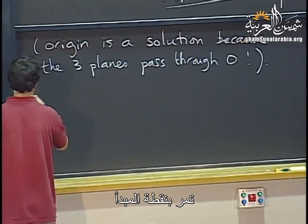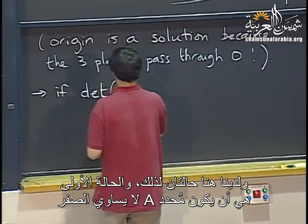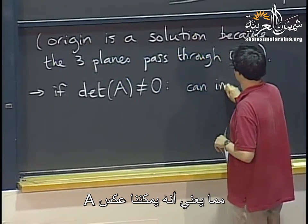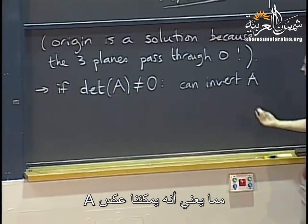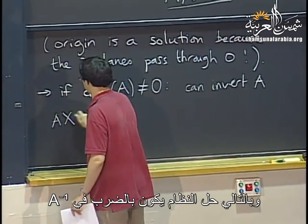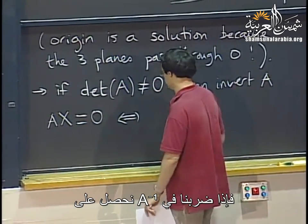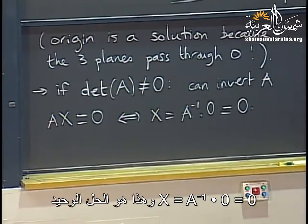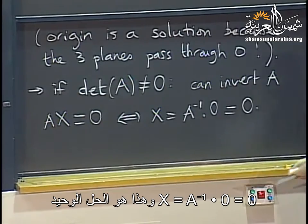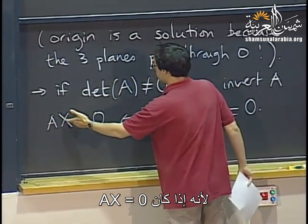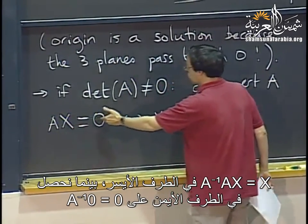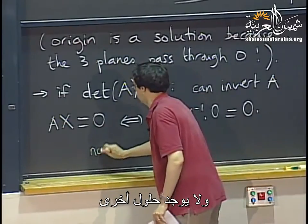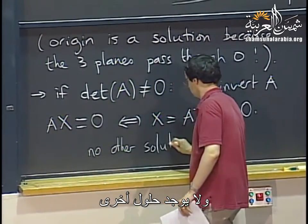Having all zeroes on the right means all three planes pass through the origin, so certainly the origin is always a solution. If the determinant of A is non-zero, we can invert A. Multiplying both sides by A inverse gives x equals A inverse times zero, which is zero — the only solution. Because if Ax equals zero and A is invertible, then A inverse Ax equals x equals A inverse times zero equals zero.